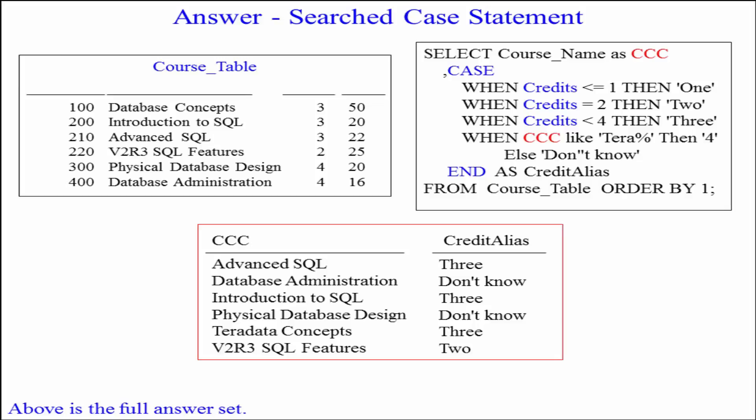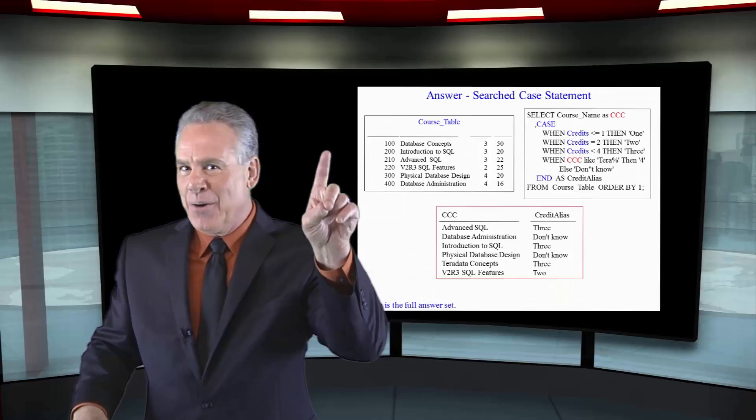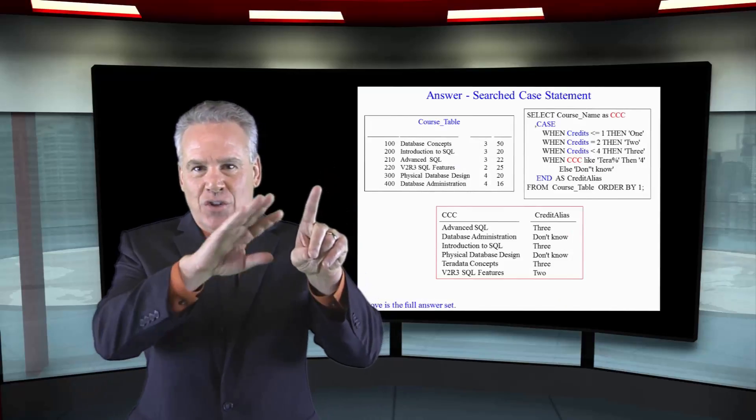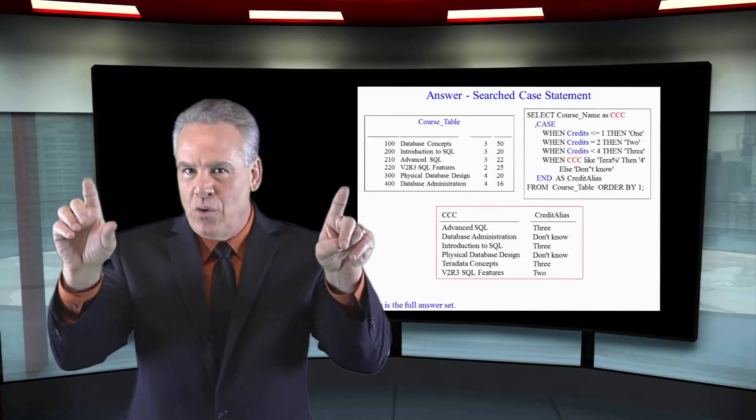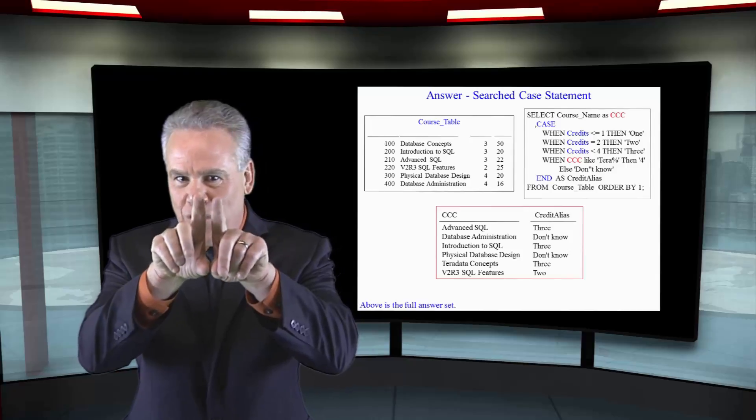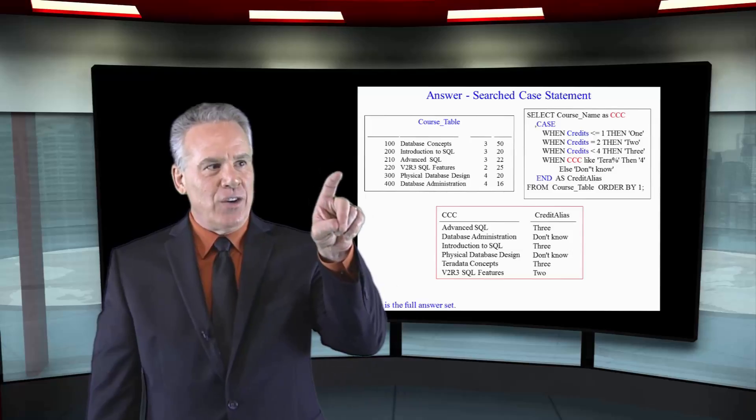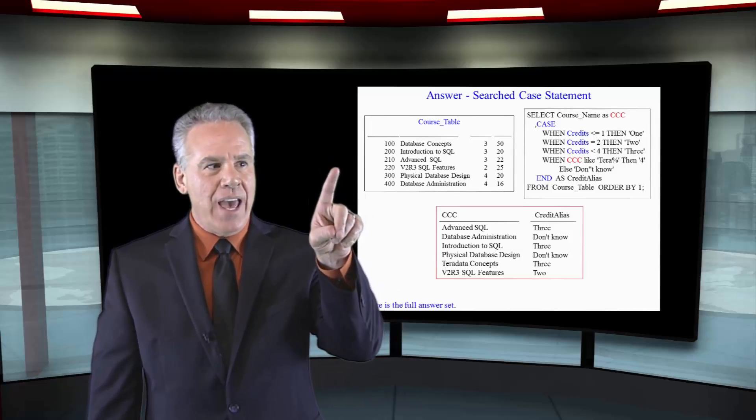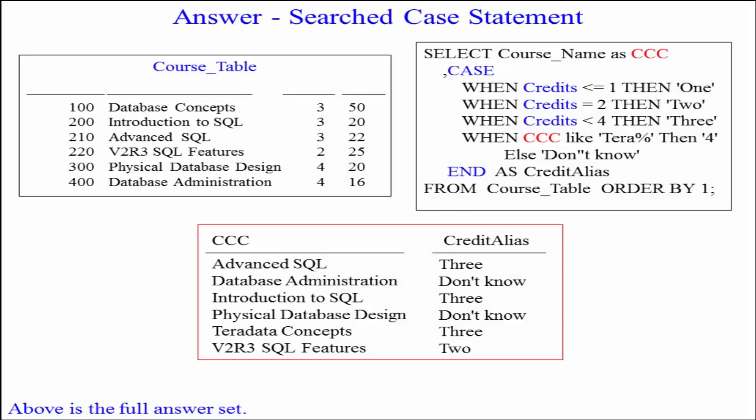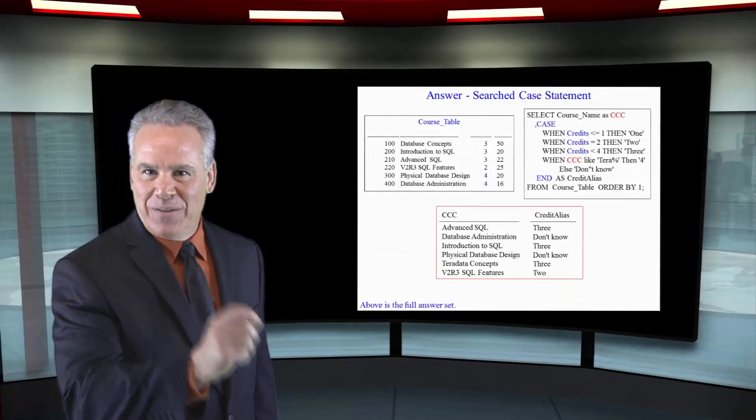Notice the else statement says, single quote, don't know, single quote, with two single quotes forming the apostrophe. So it's actually single quote, D-O-N, single quote, single quote, T, space, no, single quote. And that's how you get an apostrophe.